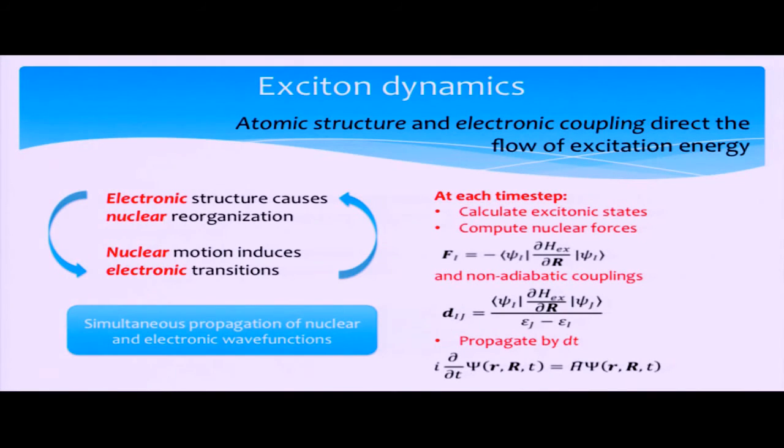So the difficulty in describing dynamics occurs due to the coupling between the electronic and nuclear degrees of freedom. You can see here these quantities have to be calculated simultaneously because they respond to each other. The electronic structure causes the nuclei to rearrange, while at the same time the nuclear motion itself induces quantum transitions between the electronic states.